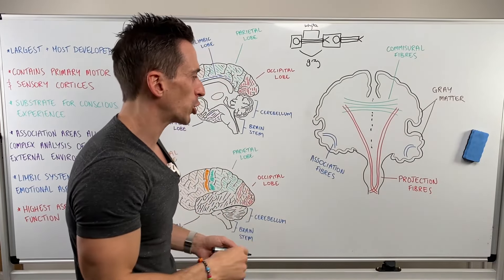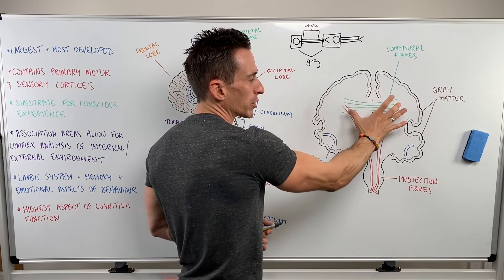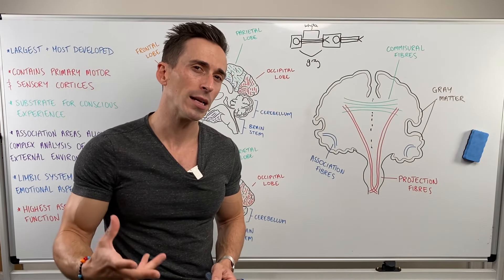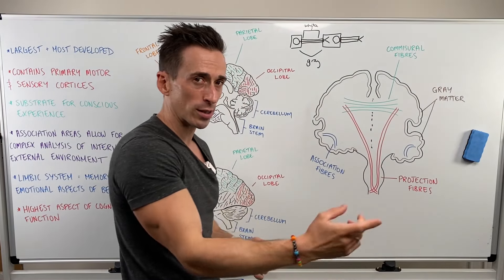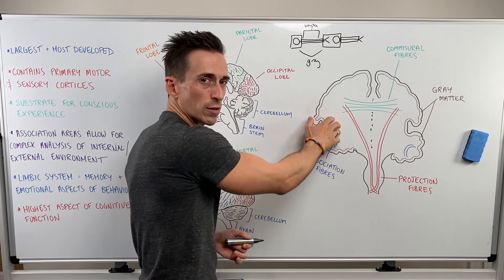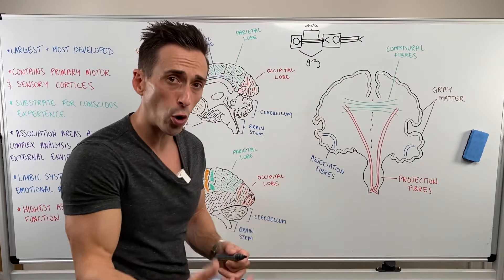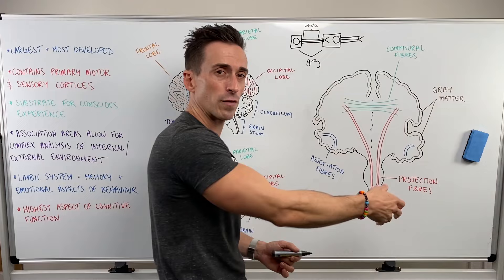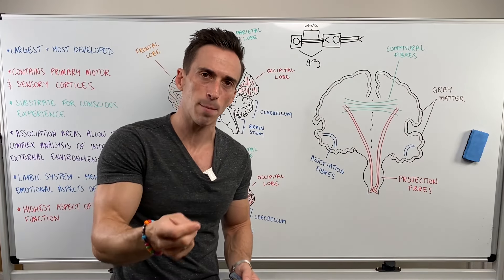We've also got projection fibers. These fibers take signals from more superficial areas of the brain to deeper aspects — the brainstem and spinal cord. You can see that they cross over to the other side because the right hemisphere controls the left side of the body and the left hemisphere controls the right, which means these projection fibers must cross at some point.